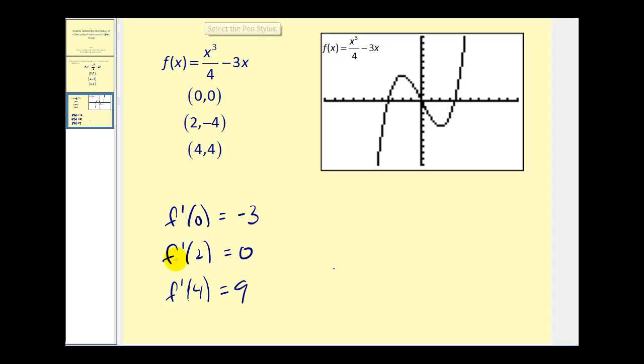f'(2) equals 0 means that at x equals 2, the slope of the tangent line should be 0, or we'd have a horizontal tangent line. And it looks like we do.